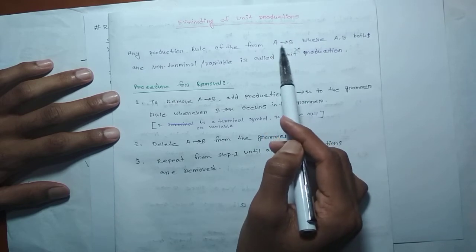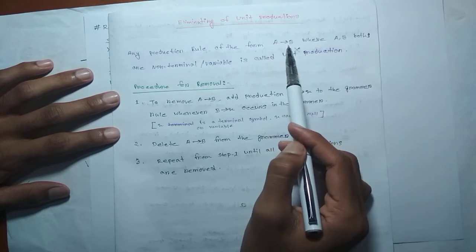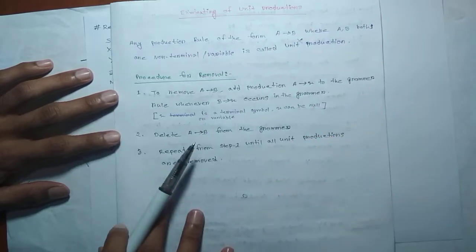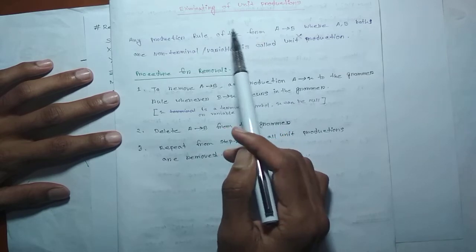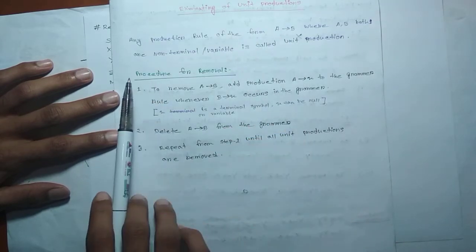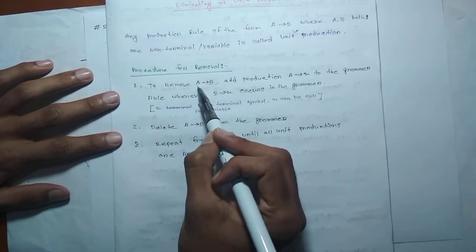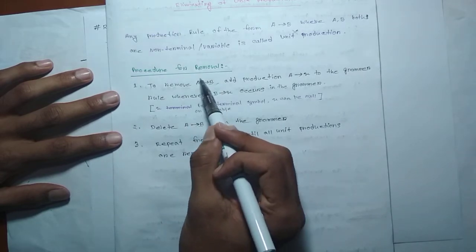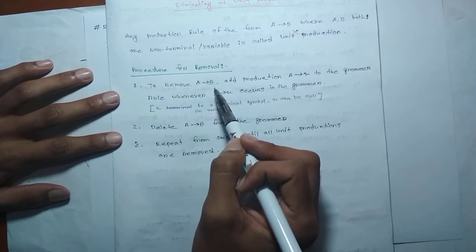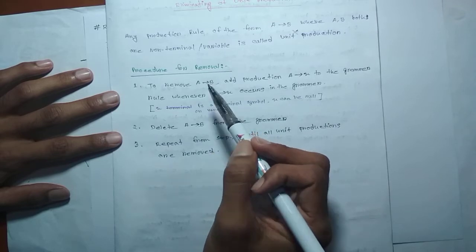When we are working with a production, we will start by identifying unit productions. We will use this to remove them from our grammar. We can see that B is a terminal symbol and a variable — a variable B is a terminal symbol by a variable.